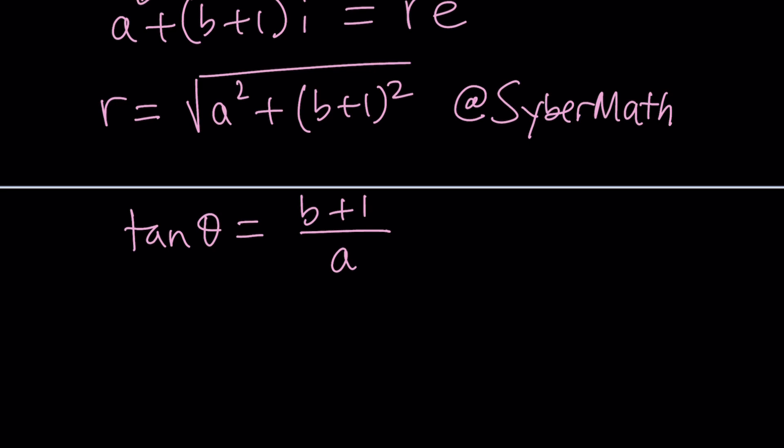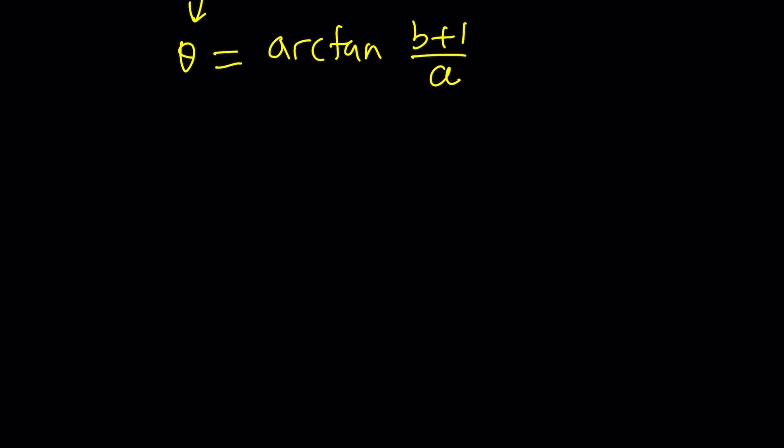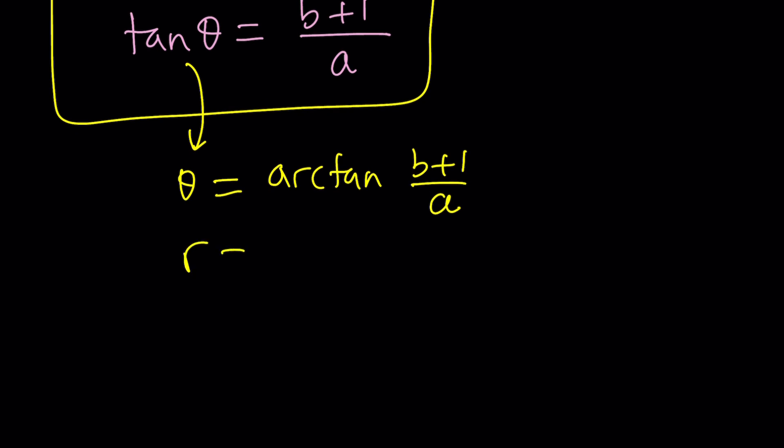Now, we have these two things. What can I do with those? I need theta. So can I just extract theta from here? Maybe, possibly, probably, theta is equal to arctan b plus 1 over a. I say possibly because there's different values depending on the quadrants. But let's keep it simple for now. I got everything I need.